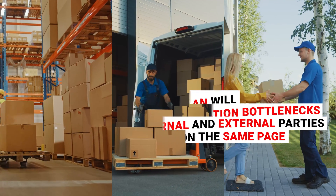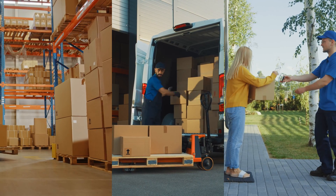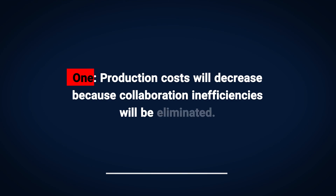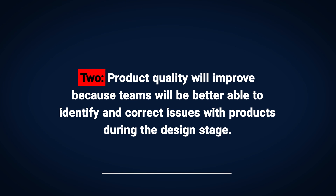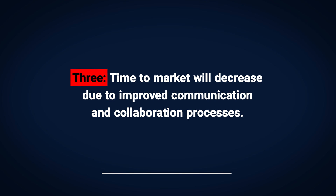As PLM processes are optimized, retailers can expect to see three key improvements. One, production costs will decrease because collaboration inefficiencies will be eliminated. Two, product quality will improve because teams will be better able to identify and correct issues with products during the design stage. And three, time to market will decrease due to improved communication and collaboration processes.